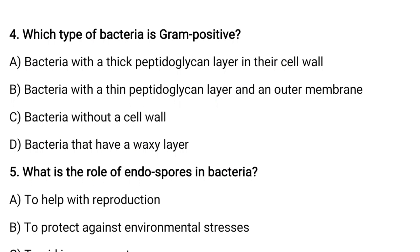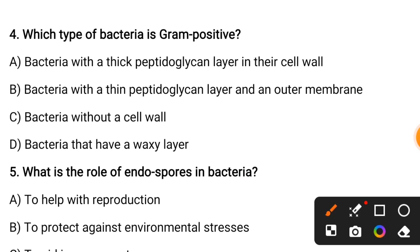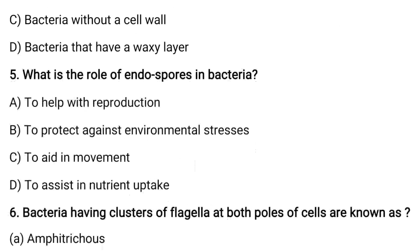Which type of bacteria is gram-positive? Options are: bacteria with a thick peptidoglycan layer in their cell wall, bacteria with a thin peptidoglycan layer and outer membrane, bacteria without a cell wall, or bacteria that have a waxy layer. The correct answer is bacteria with a thick peptidoglycan layer. Opposite to this, a thin peptidoglycan layer is present in gram-negative bacteria.